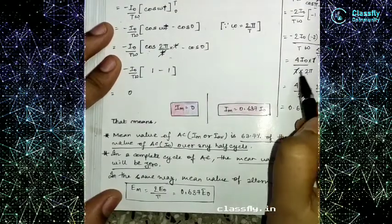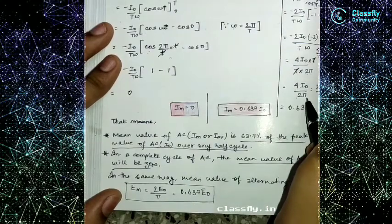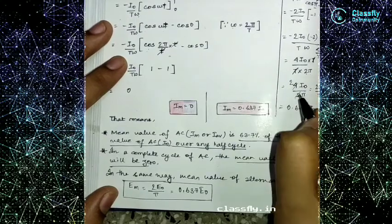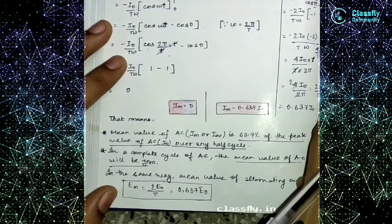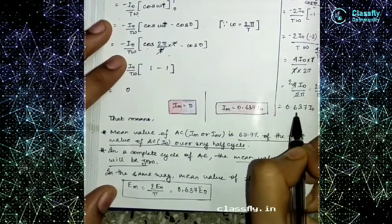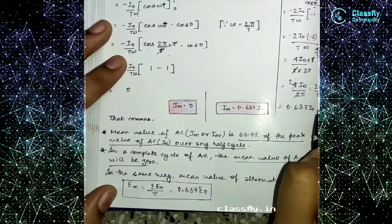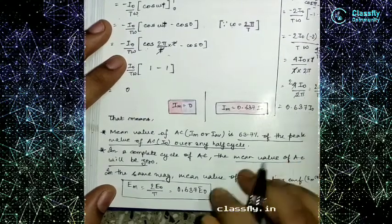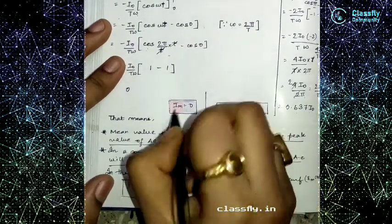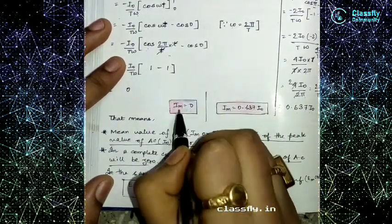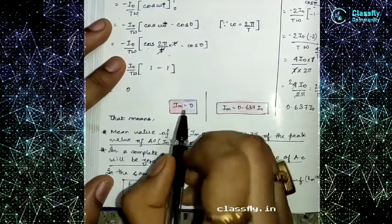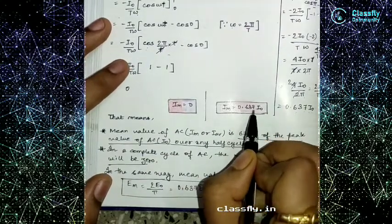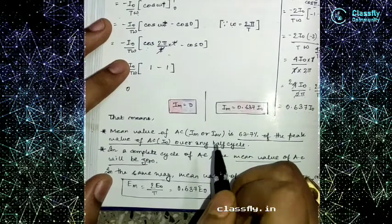After cancellation, T·T gets cut and we get 4I₀ divided by 2π. When we simplify 4 and 2, we get 2I₀/π, and when we compute this we get 0.637 I₀. So for the full cycle, I_average = 0, but for the half cycle, I_average = 0.637 I₀.